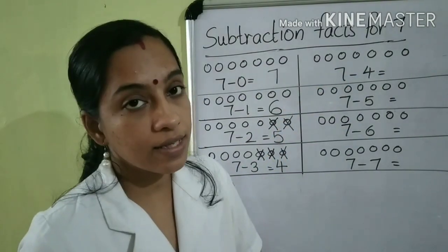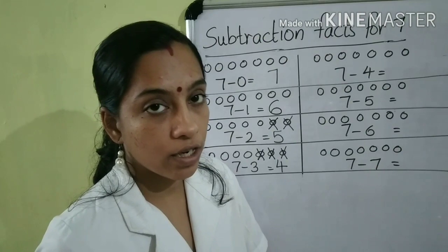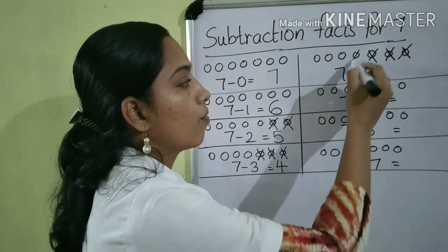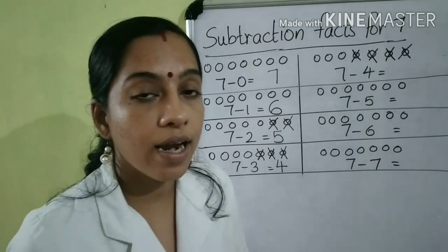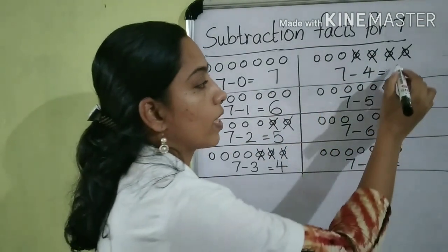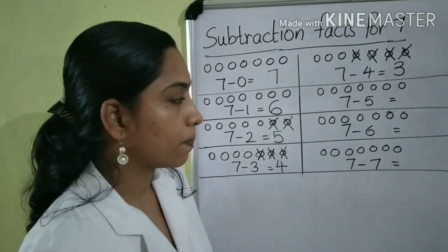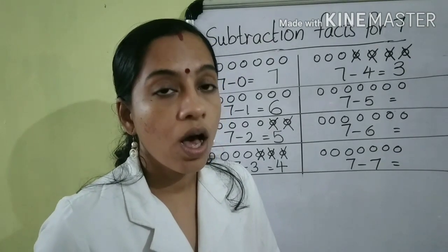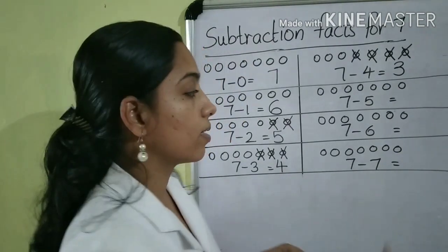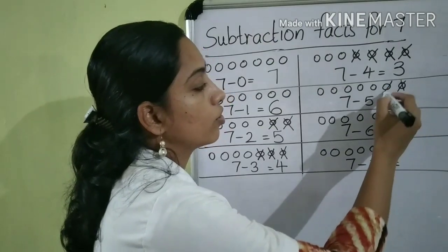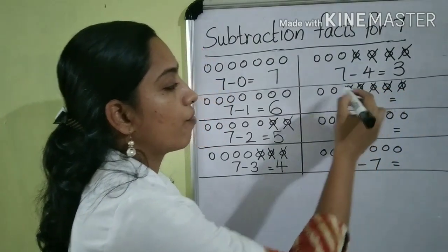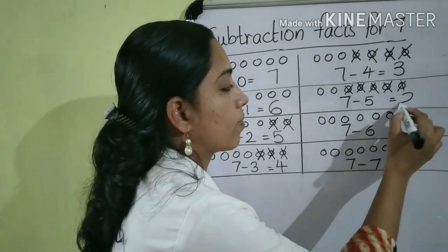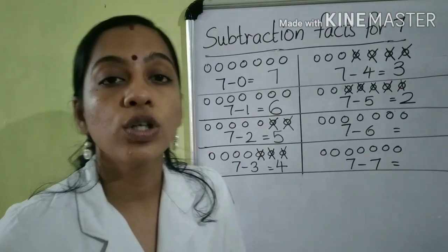Then, 7 minus 4 — cross 4 circles: 1, 2, 3, 4. How many circles are left here? 3 circles. So, we can write 3. Next, 7 minus 5 — cross 5 circles: 1, 2, 3, 4, 5. Then how many circles are left here? 2. That is, 7 minus 5 is equal to 2.